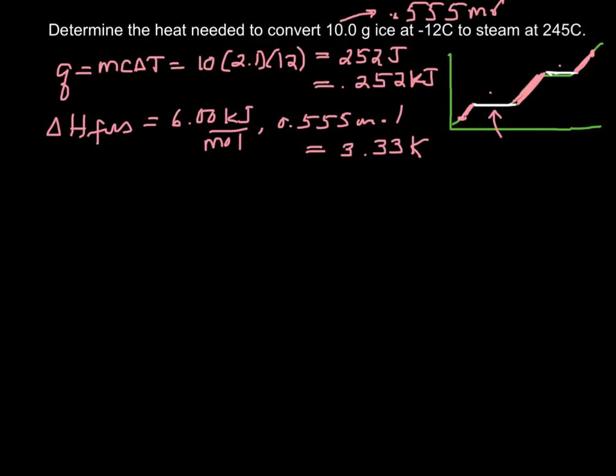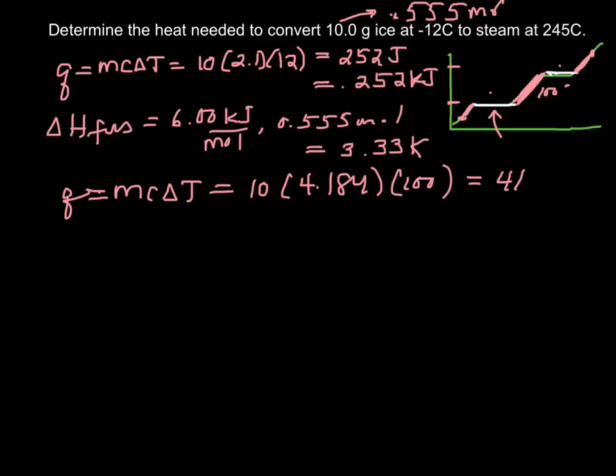Now we're at the third one. Again, Q is MC delta T. Now we're in water, still weighs 10. Specific heat of water is 4.184, and the change in temperature is from the melting point to the boiling point, so 100 degrees. This gives us 4.184 kilojoules. I'm changing them to kilojoules so they'll all be in the same units because we're going to add them together.